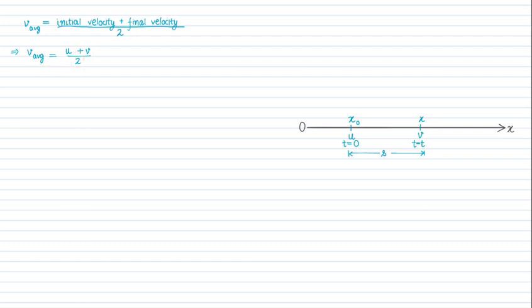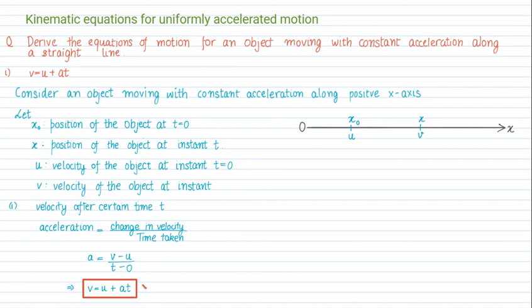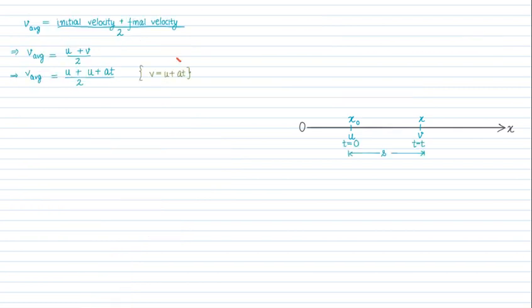In this expression I can substitute the velocity-time relation, where final velocity v equals u plus at. Substituting, the average velocity becomes (u + u + at) / 2, which simplifies to (2u + at) / 2.